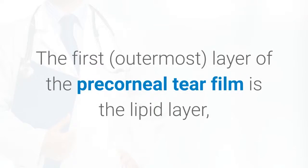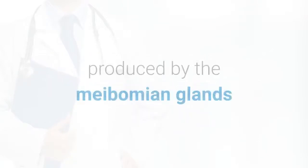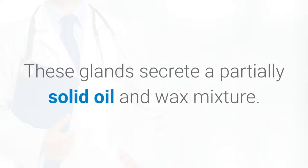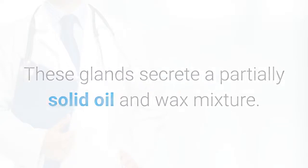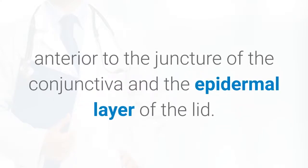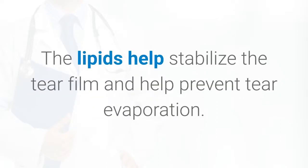The first layer of the precorneal tear film is the lipid layer, produced by the meibomian glands and the accessory sebaceous glands of Zeis, which are embedded in the superior and inferior lids. These glands secrete a partially solid oil and wax mixture. The gland openings are located on the lid margin anterior to the juncture of the conjunctiva and the epidermal layer of the lid. The lipids help stabilize the tear film and help prevent tear evaporation.